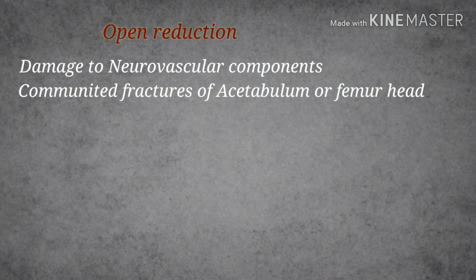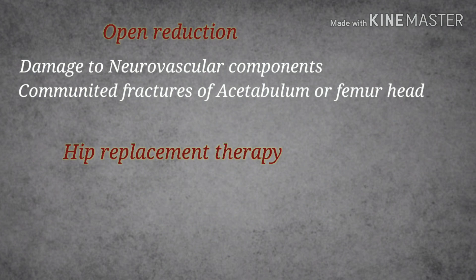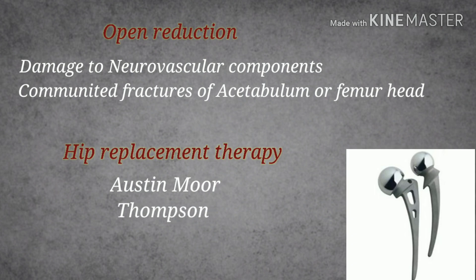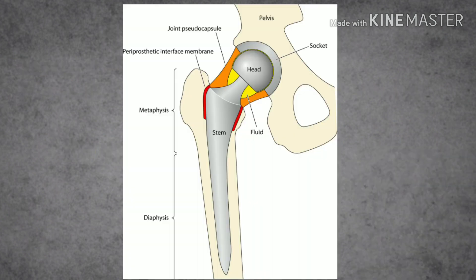If both closed and open reduction methods fail and the severity is significant, we proceed to hip replacement therapy, which may be hemiarthroplasty or total hip replacement. These methods are rarely used and mostly applied in pathological cases or severe trauma. Two instruments used are the Austin Moore and Thompson prostheses — the Austin Moore has two holes, while the Thompson has none.